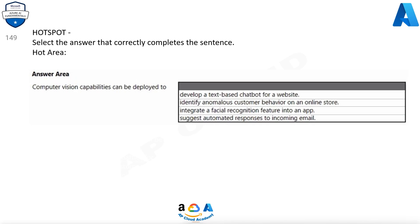Select the answer that correctly completes the sentence. Computer vision capabilities can be deployed to: develop a text-based chatbot for a website, identify anomalous customer behavior on an online store, integrate a facial recognition feature into an app, or suggest automated responses to incoming email. Correct answer: integrate a facial recognition feature into an app.